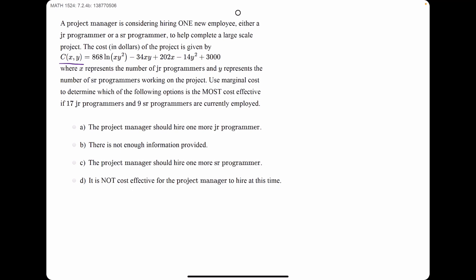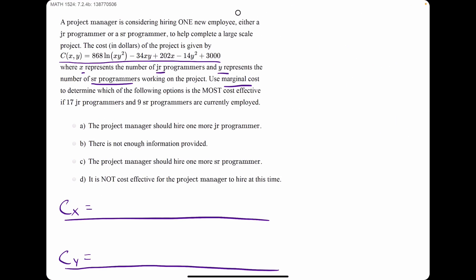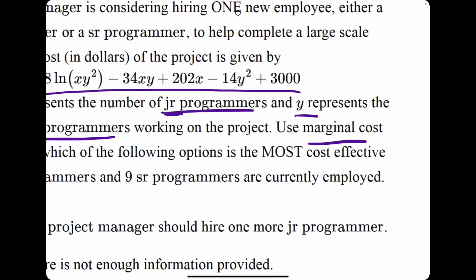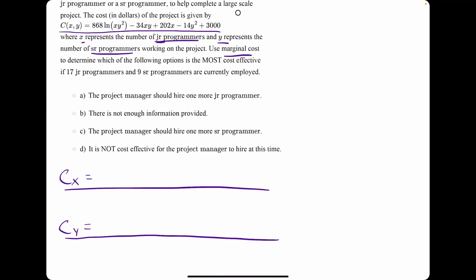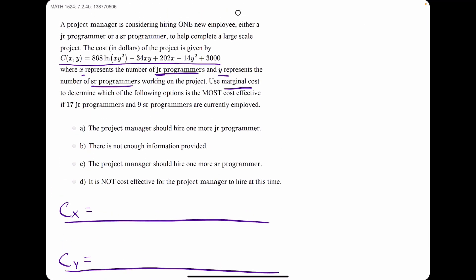We are given a cost equation representing junior programmers, or with respect to junior programmers, which is x, and senior programmers, which is y. They say use marginal cost, which means we want to find the first derivative with respect to x, the first derivative also with respect to y. This would be the marginal cost with respect to x, or with respect to junior programmers, and then Cy would be the marginal cost with respect to senior programmers.